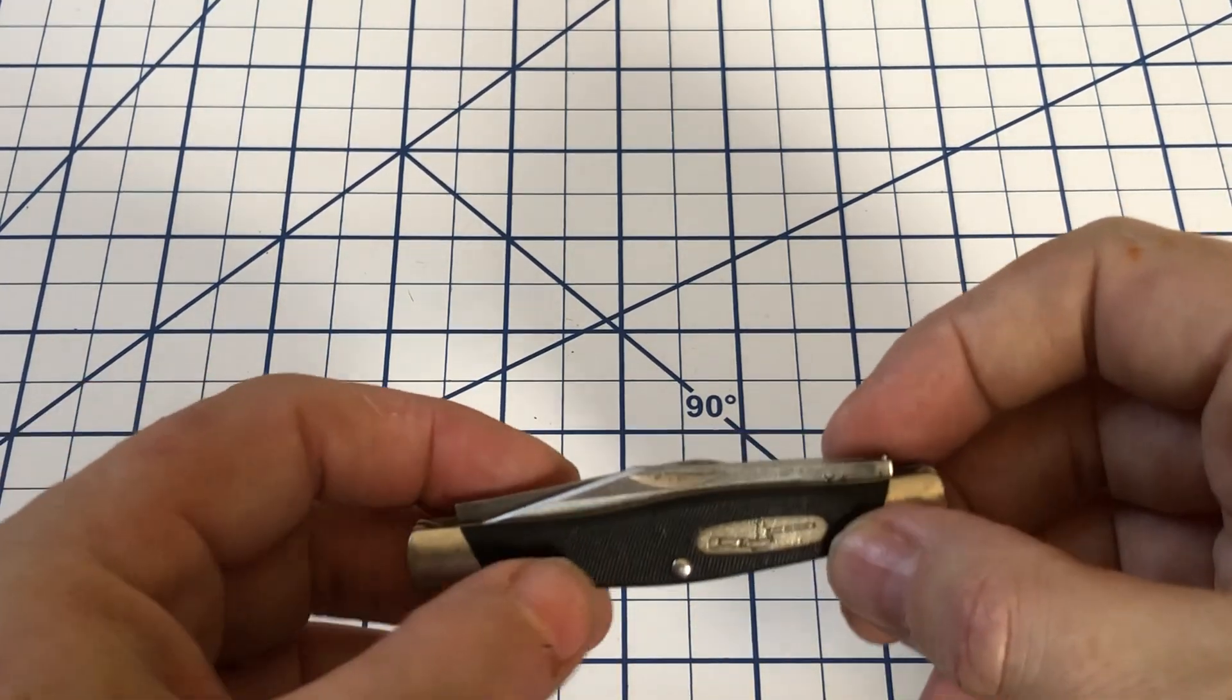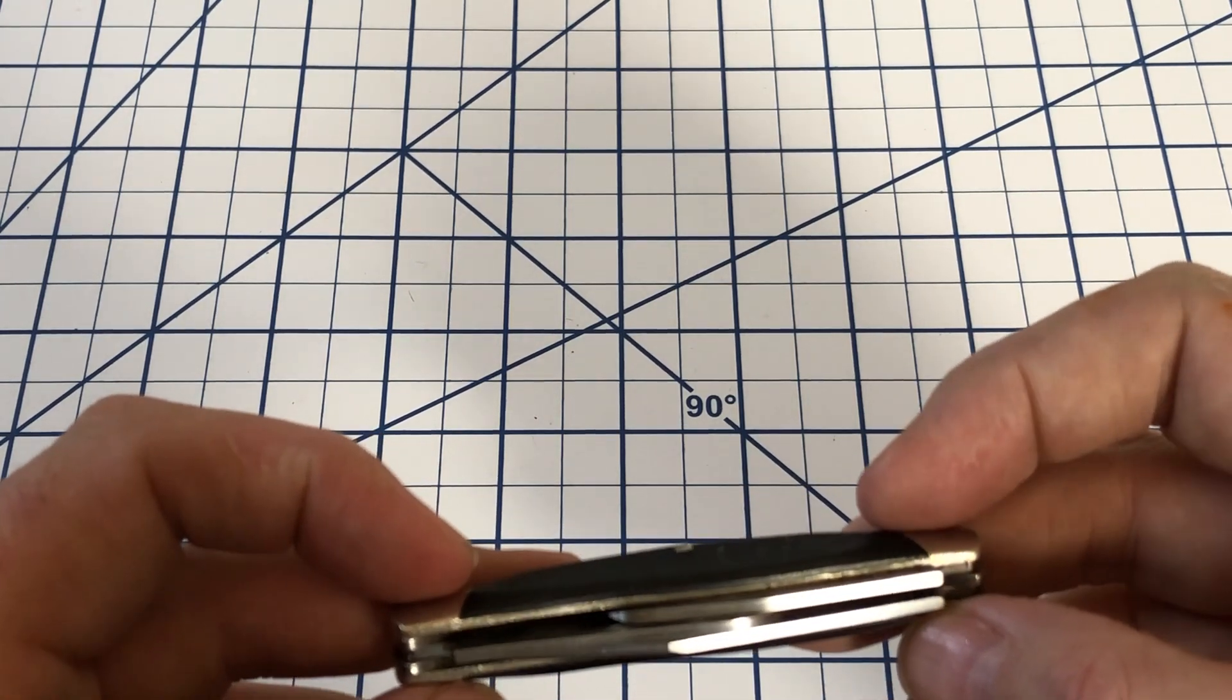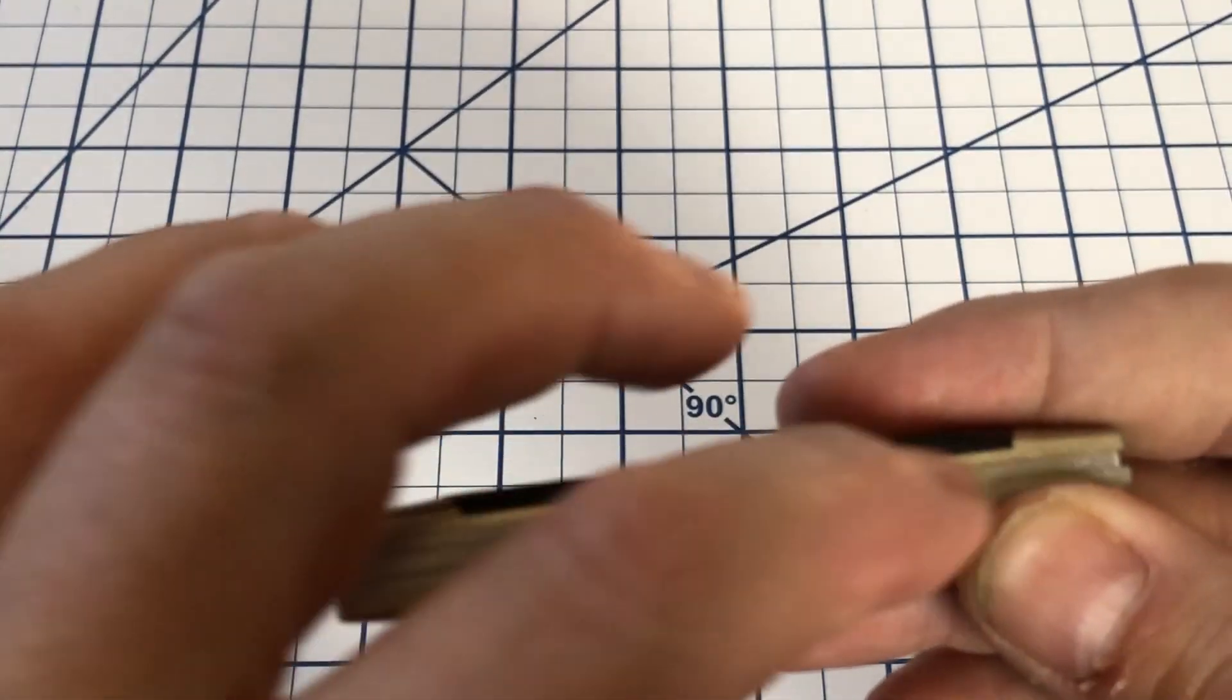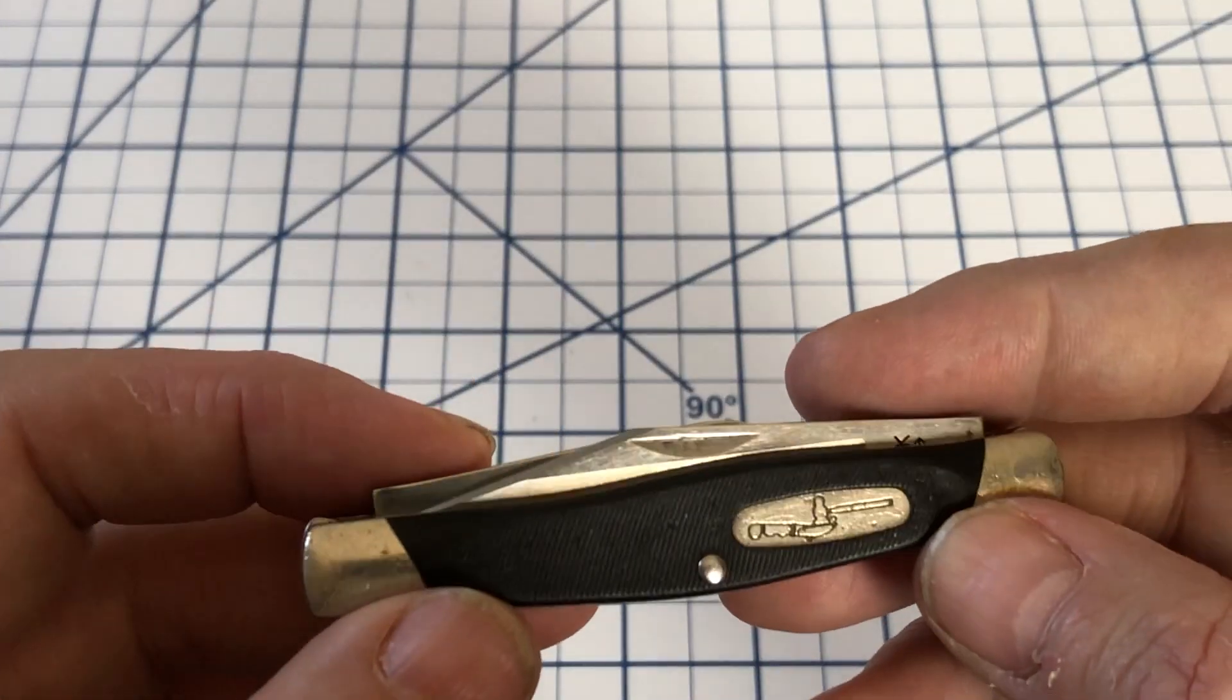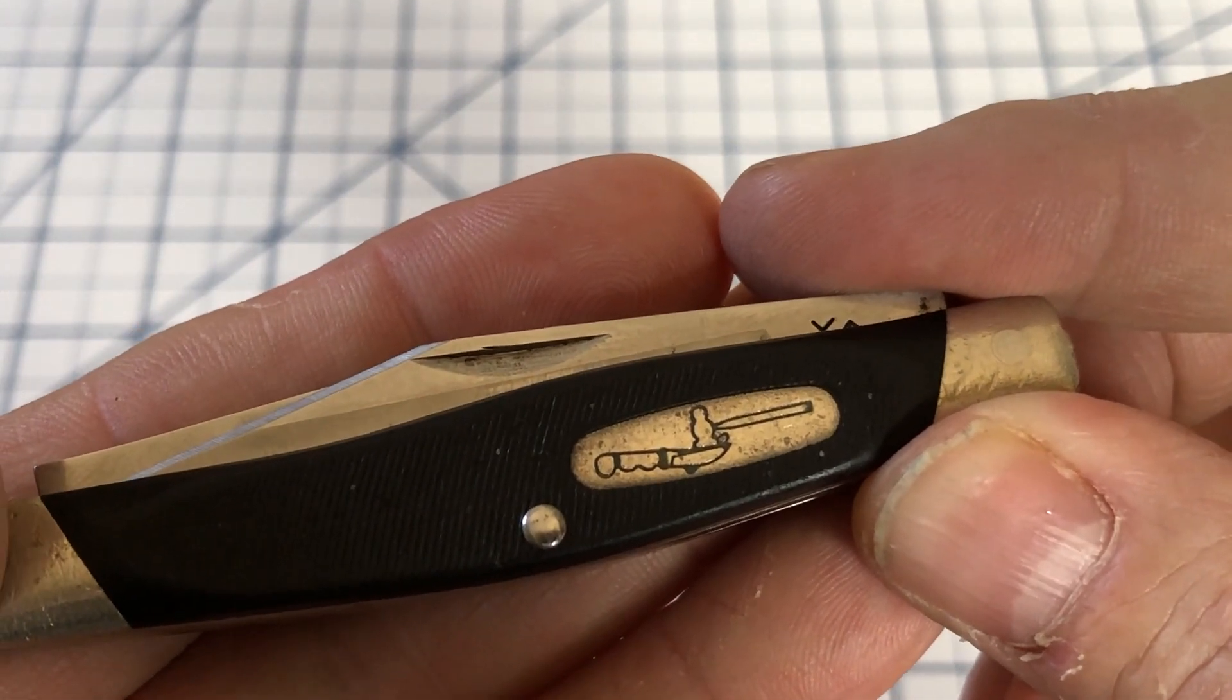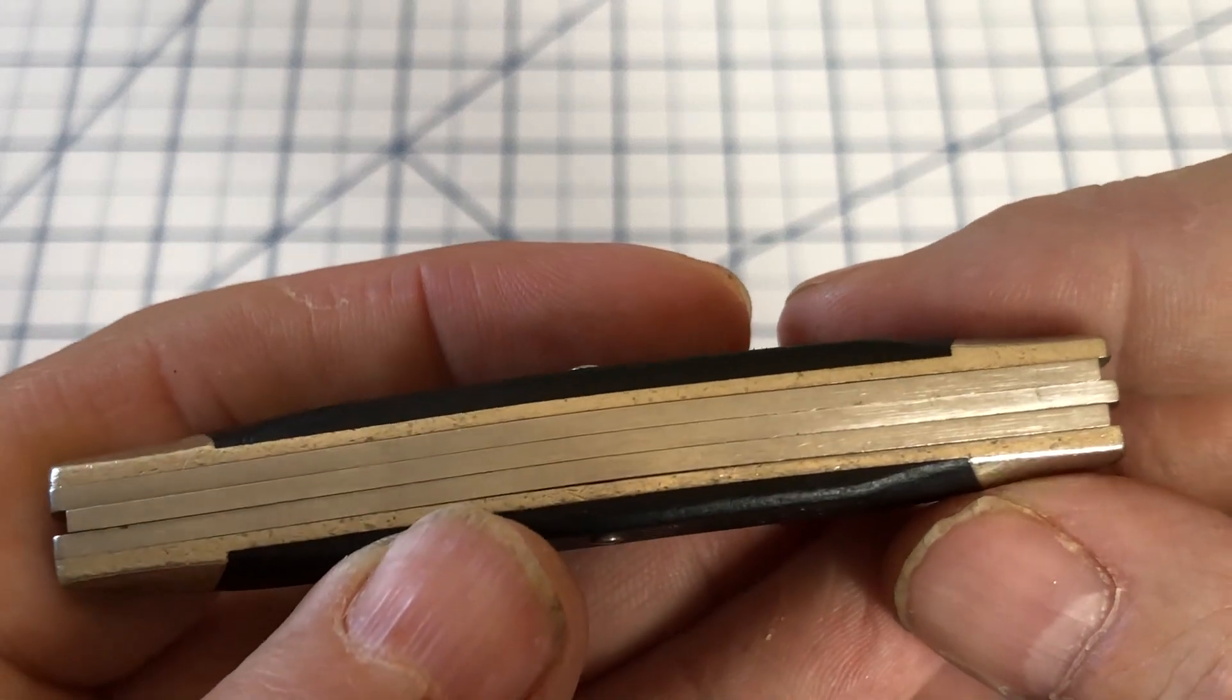It has Delrin covers, nickel silver bolsters, and you can see the nickel silver bolsters and the liners are all made of one piece of nickel silver. See the Buck shield there also in nickel silver. Three back springs, no liners.